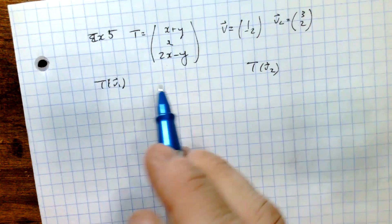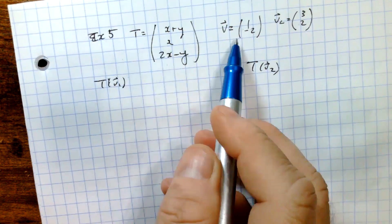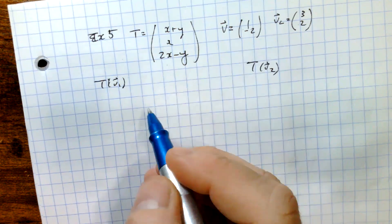In this example, we're going to look at the transformation from R2 to R3, given by this transformation here, and see how it affects these two vectors, V1 and V2.